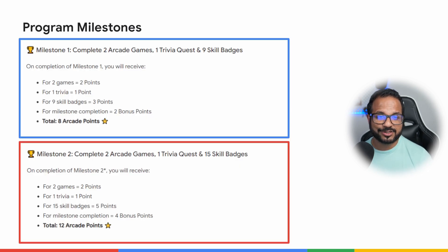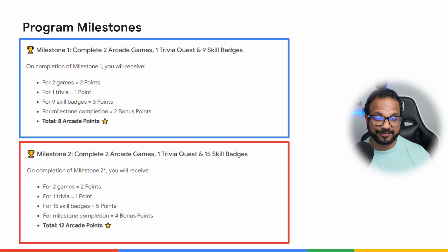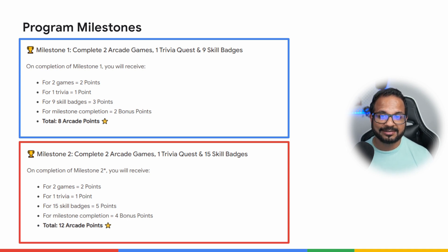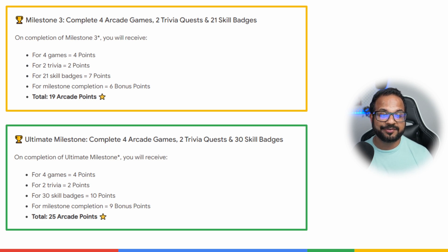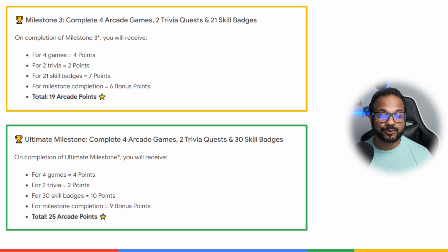Here are the milestones in detail. The first milestone requires eight points. The second milestone requires two arcade games, one trivia, and up to 15 skill badges, giving a maximum of 12 arcade points. The third milestone requires four arcade games, two trivia, and 21 skill badges, with a chance to earn 19 arcade points. And then there is the ultimate milestone, where you complete four arcade games, two trivia, and 30 skill badges, earning a total of 25 arcade points.